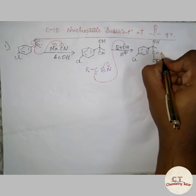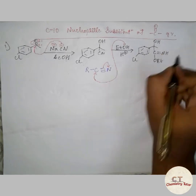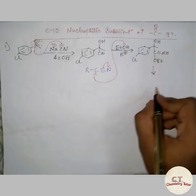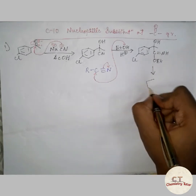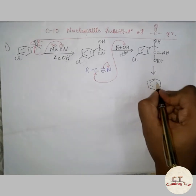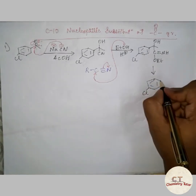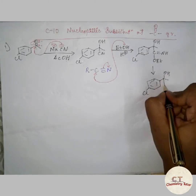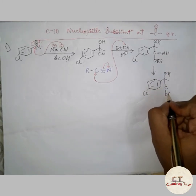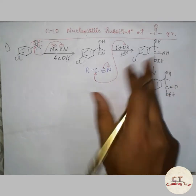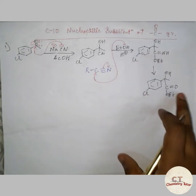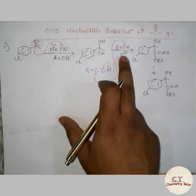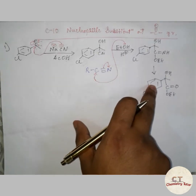Since H⁺ is present, that means acid hydrolysis. The final product will be an ester — the NH bond will be converted to a C=O double bond. This will be the final product since hydrolysis occurs.